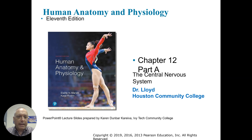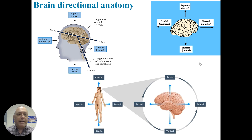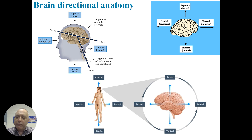Let me guide you through it with some directional anatomy. Looking at the brain from above would be superior or dorsal, and from below would be inferior or ventral. The posterior, or back of the brain, is also caudal — like tail, the tail of the brain. The front of the brain is anterior and also called rostral. We have views showing dorsal and ventral, rostral, caudal, superior, and inferior.